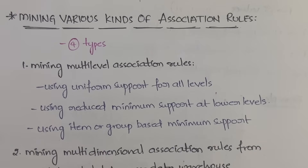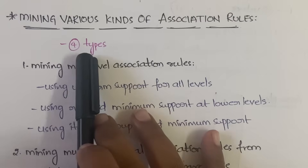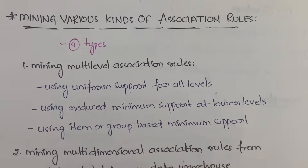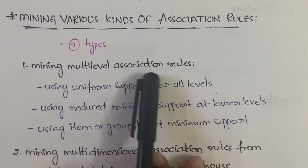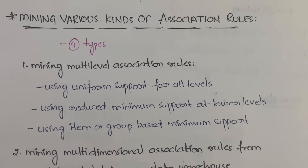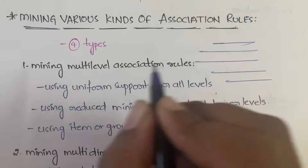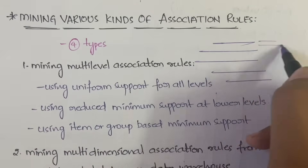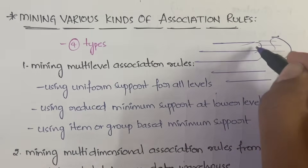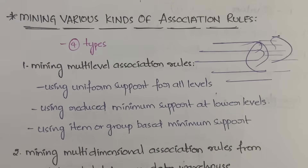How you will be mining those kinds of rules, let us learn now. First is mining multi-level association rules. We are going to discuss four types — in the first one only we have subtypes; in the next ones we don't. Multi-level means data mining systems should be able to mine association rules at multiple levels of abstraction, and they should be able to move quickly among different levels.